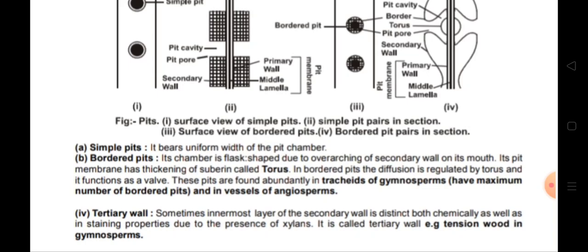The tertiary wall: sometimes the innermost layer of the secondary wall is distinct both chemically and in staining properties due to the presence of xylan deposition. When this xylan deposition occurs, we call it the tertiary wall. An example is tension wood in gymnosperms.